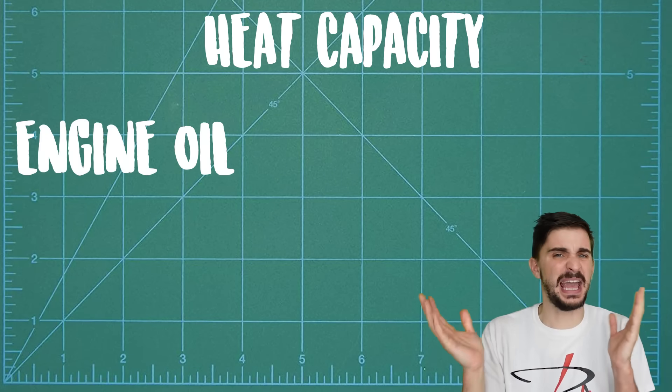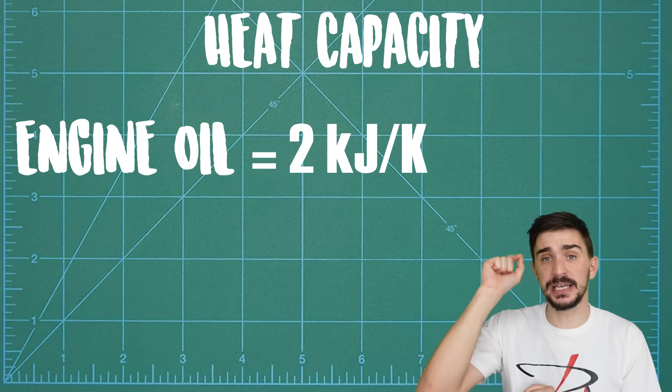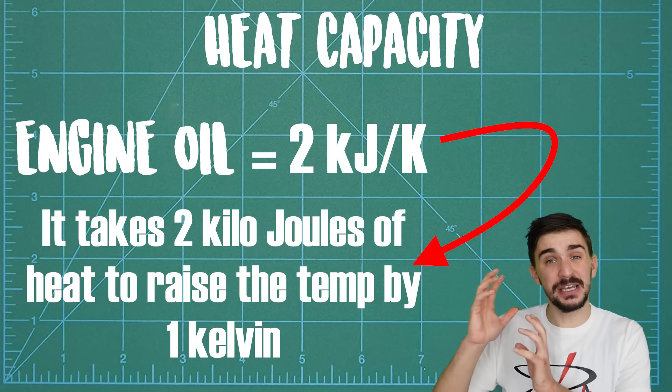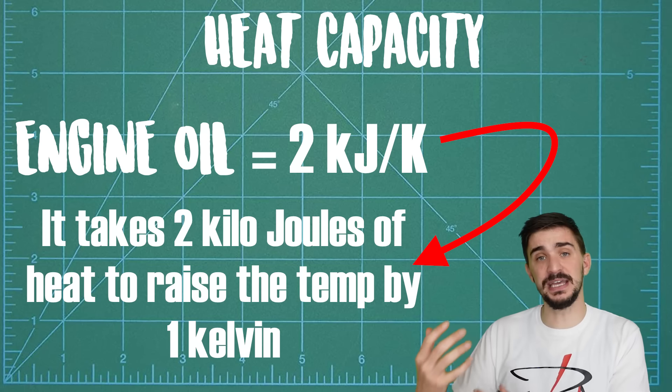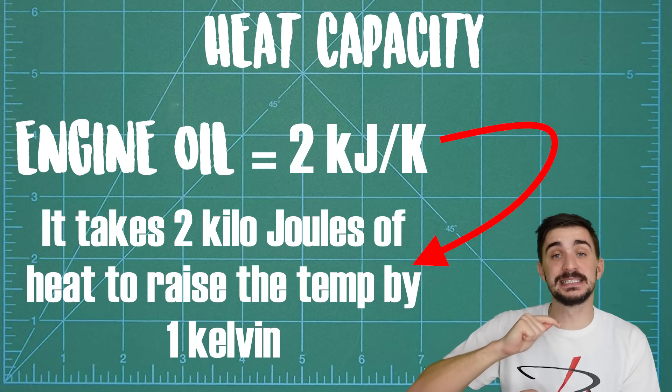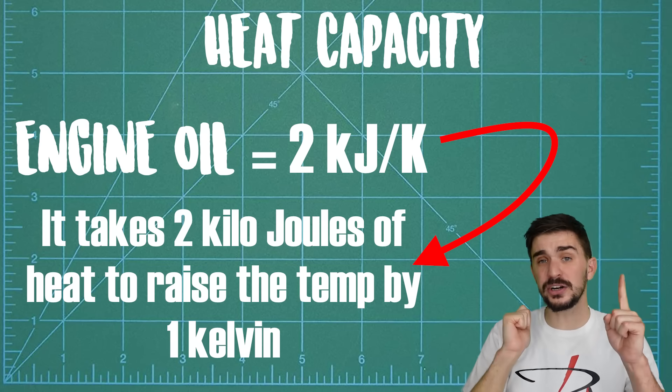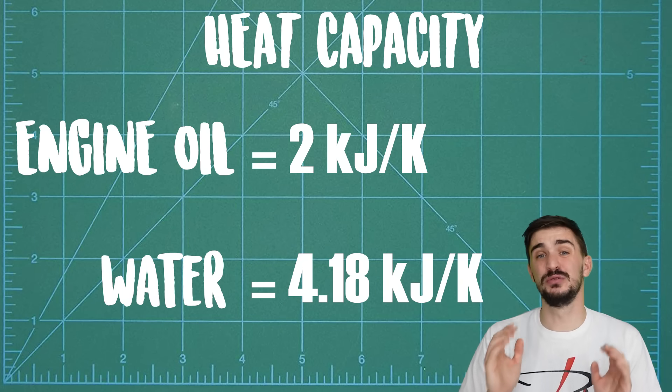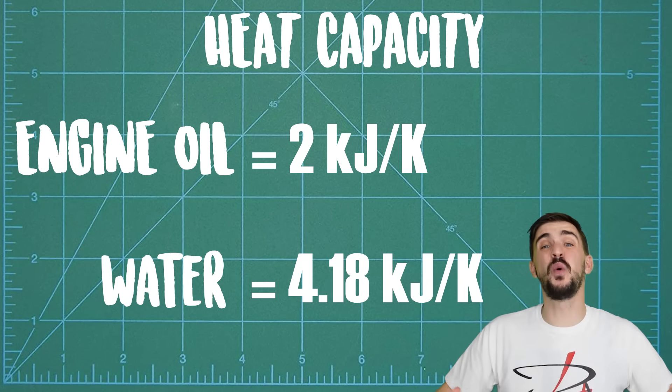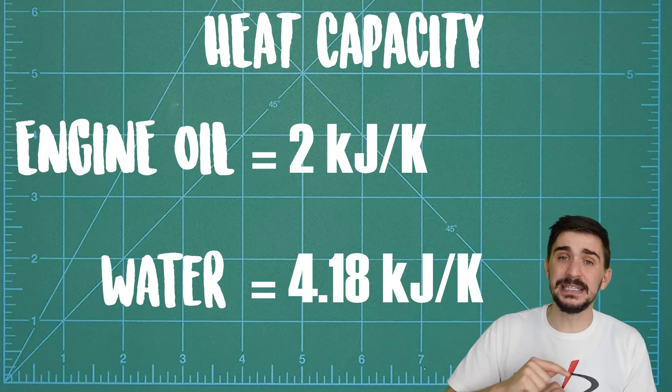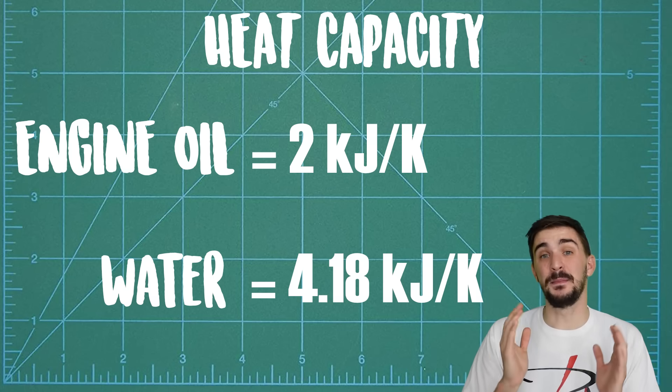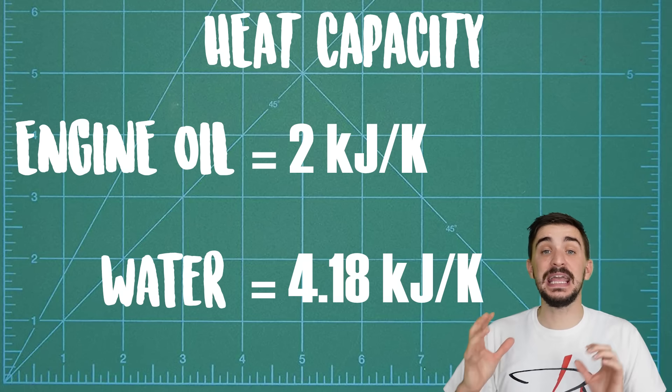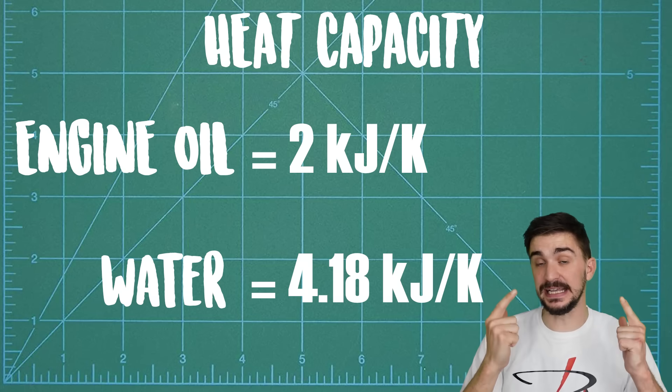But there's another drawback to oil cooling, and it has to do with the heat capacity of engine oil. Now unused engine oil has an average heat capacity of around 2 kilojoules per kelvin. This means that it can absorb 2 kilojoules of energy in the form of heat before its temperature increases by 1 kelvin. Water on the other hand has a heat capacity of 4.18 kilojoules per kelvin, which means that water can absorb twice the amount of heat before its temperature starts increasing, making water the ideal solution for cooling engines if you plan to make your engines generate a lot of heat.